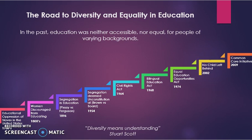In the 1800s, women were discouraged from educating because it was seen as unnatural for a woman to be educated. In 1896, we had the segregation and education case Plessy v. Ferguson. But this was overturned, with segregation being deemed unconstitutional, with the Brown v. Board of Education case in 1954. We had the Civil Rights Act in 1964, which was a pivotal case in history.